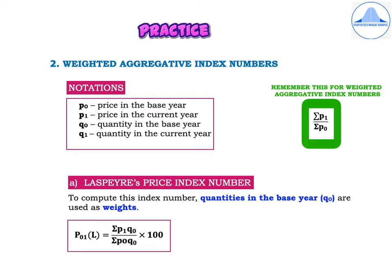Now let's discuss Weighted Aggregative Index Numbers. Before starting with the various types, let us first learn the notations: P0 is the price in the base year, P1 is the price in the current year, Q0 is the quantity in the base year, and Q1 is the quantity in the current year.